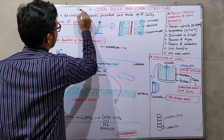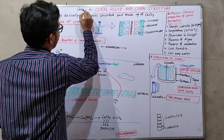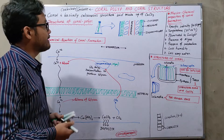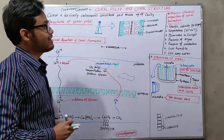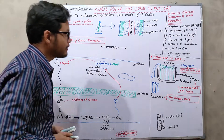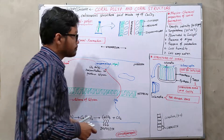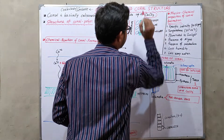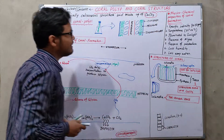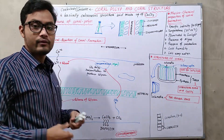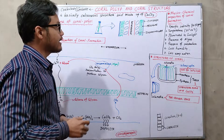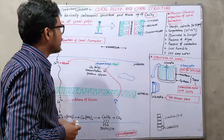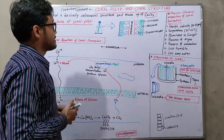Corals are classified under Cnidaria. Coral is basically a calcareous structure made up of calcium carbonate. So the basic unit of coral is calcium carbonate, which solidifies in the water and ultimately forms the coral.